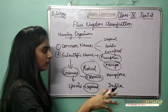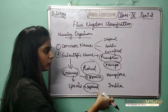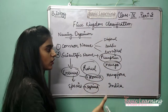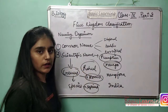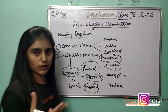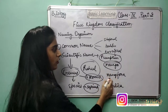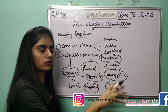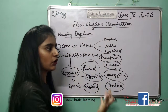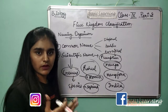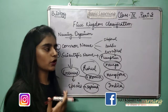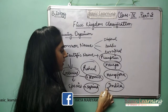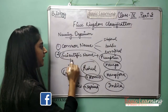Suppose you are talking about mango and one scientist is present. He does not know what you mean by 'mango.' He knows only Mangifera indica. If you say 'mango' he will not understand which organism you are referring to. He will only understand Mangifera indica, because he knows only scientific names.